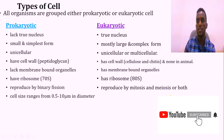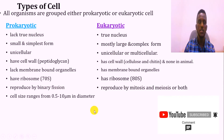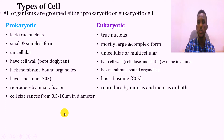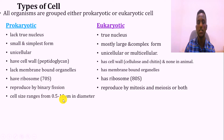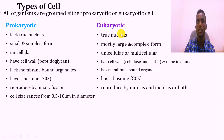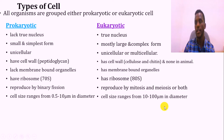Based on cell size: prokaryotic cells are small. Their size ranges from 0 to 10 micrometers in diameter. But in case of eukaryotic cells, they are large, ranging from 10 to 100 micrometers in diameter.